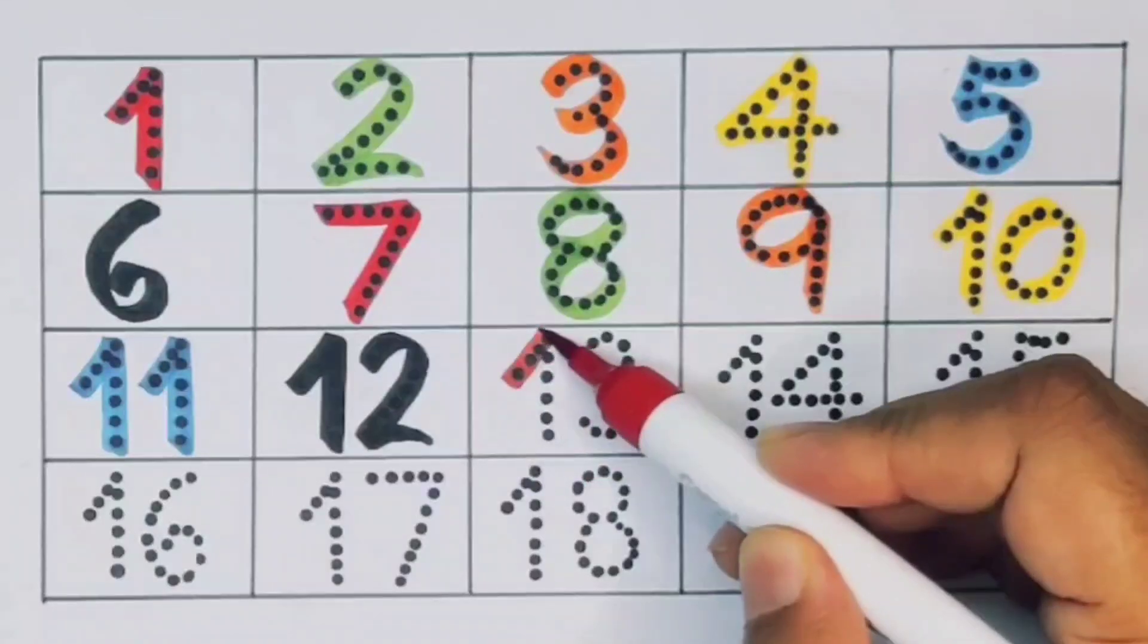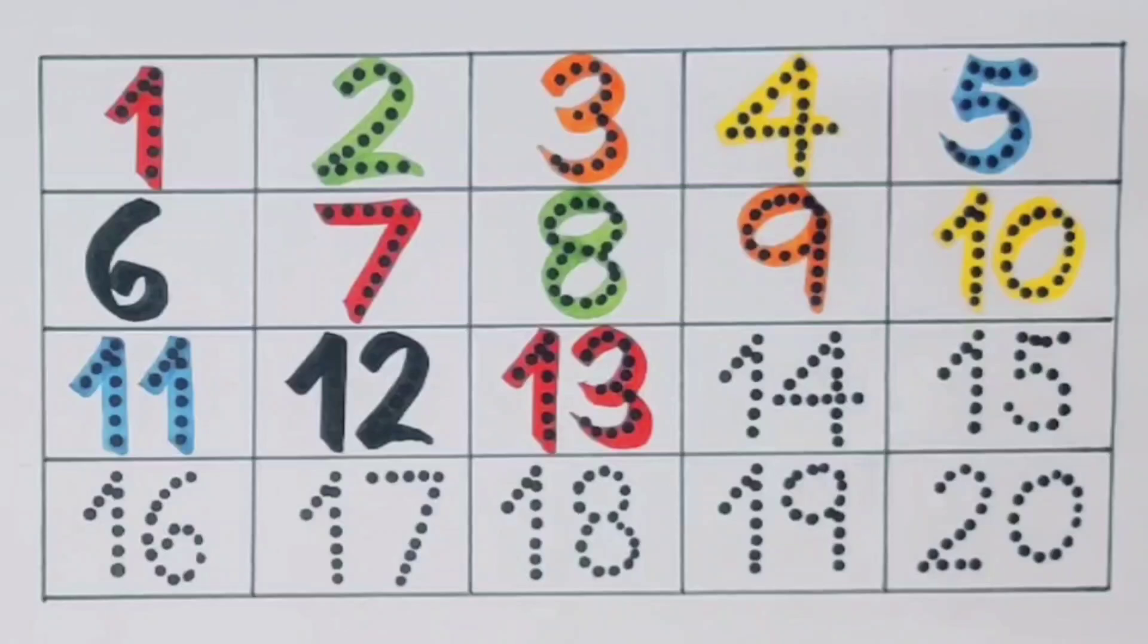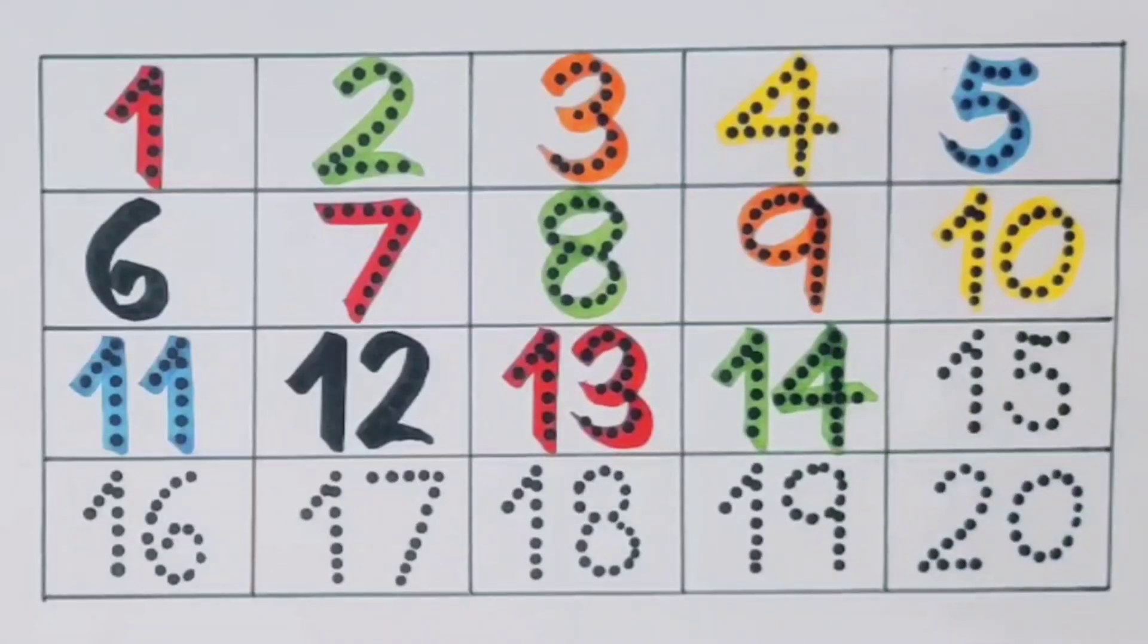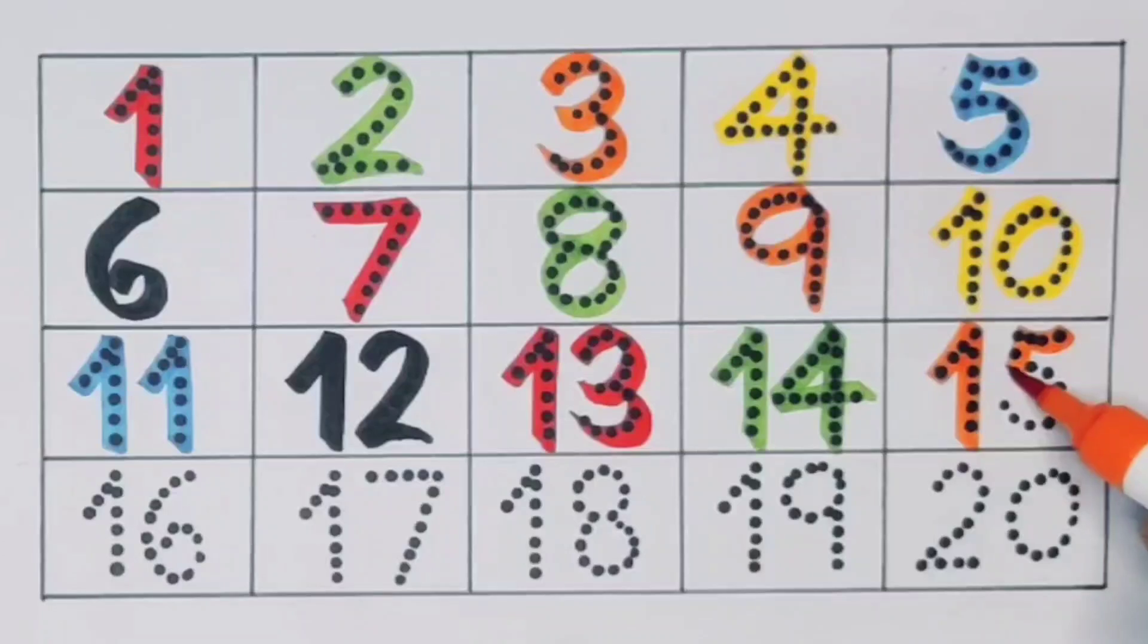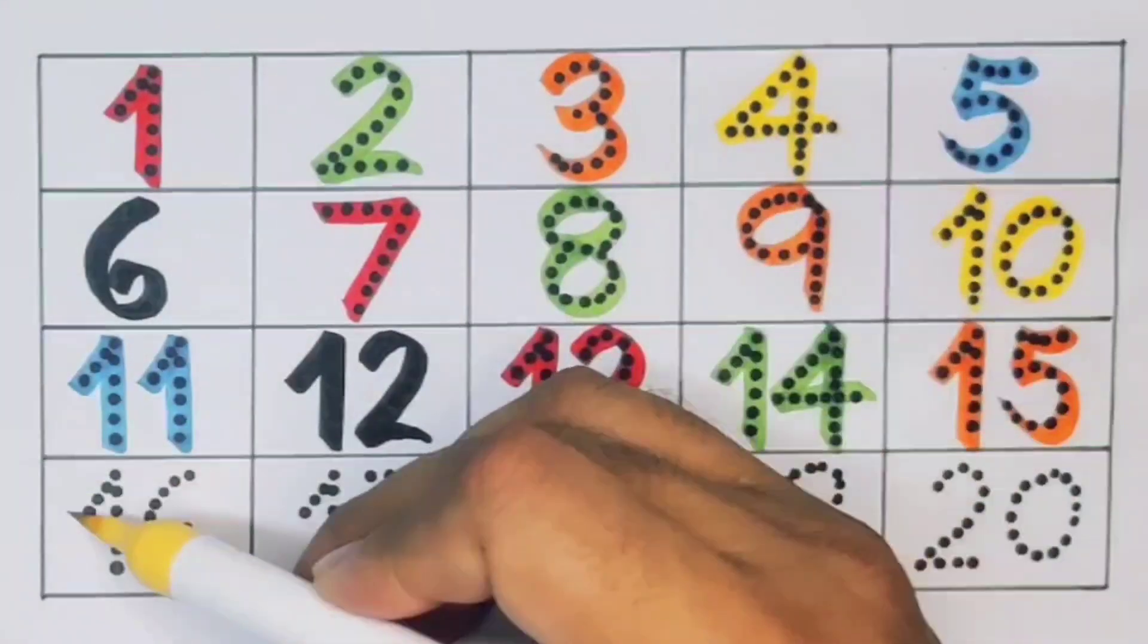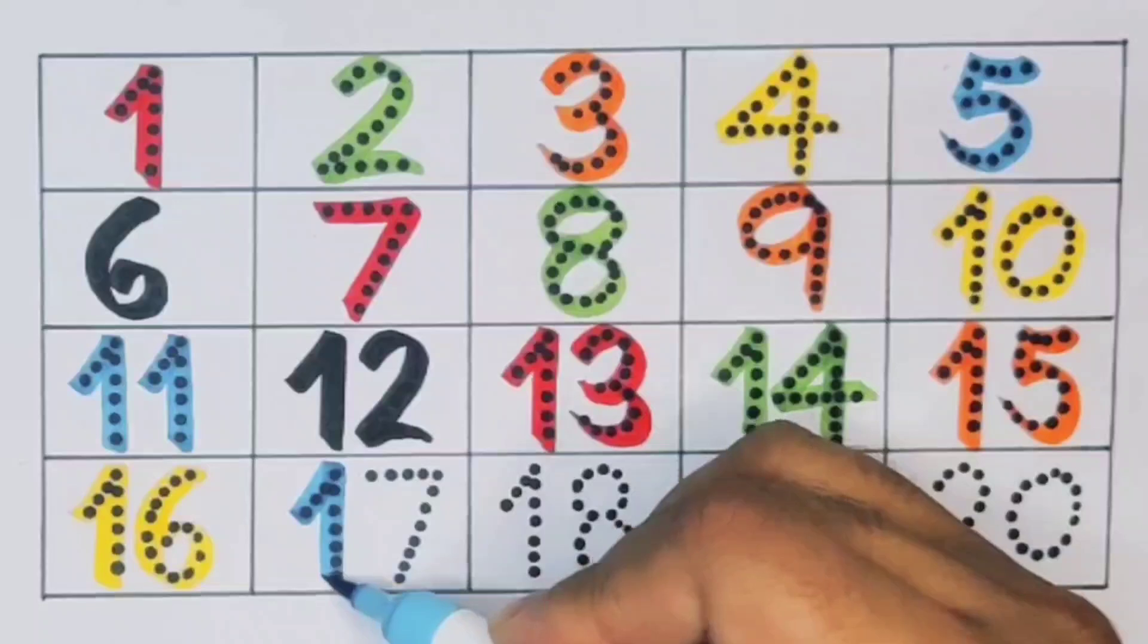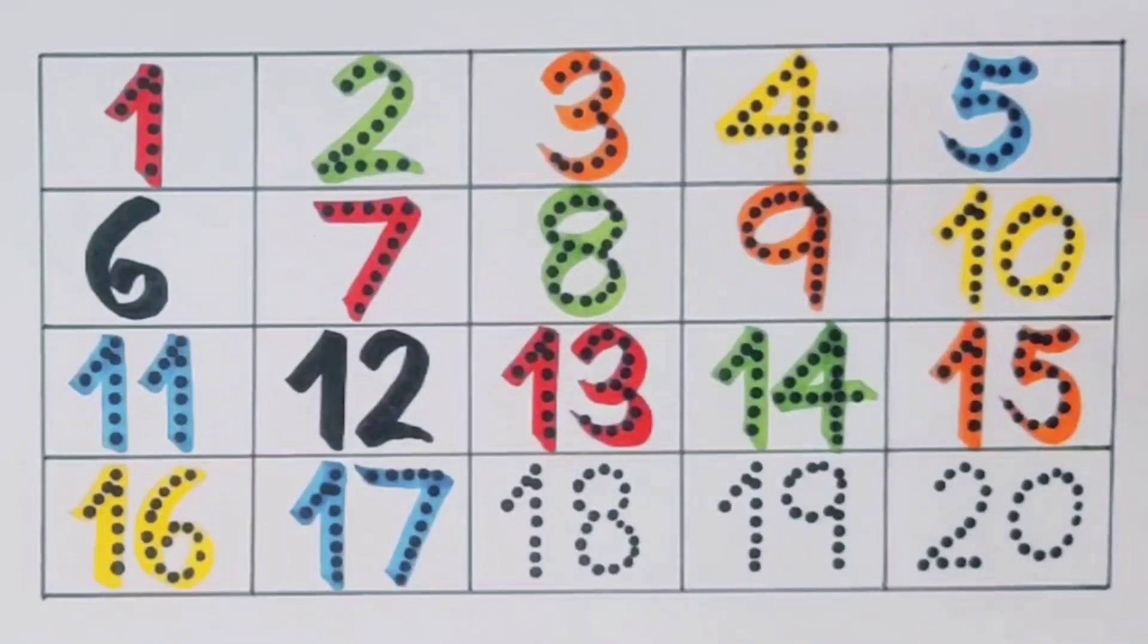Number thirteen. Next kids, fourteen, one four, fourteen, number fourteen. Next kids, fifteen, one five, fifteen, number fifteen. Next kids, sixteen, one six, sixteen, number sixteen.